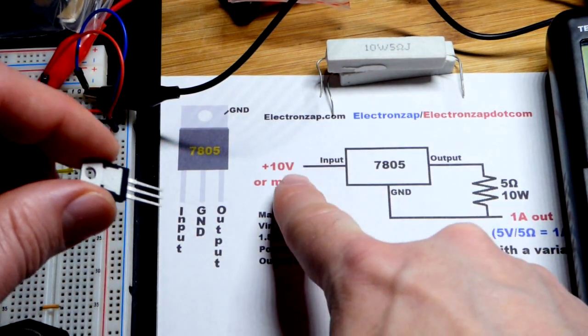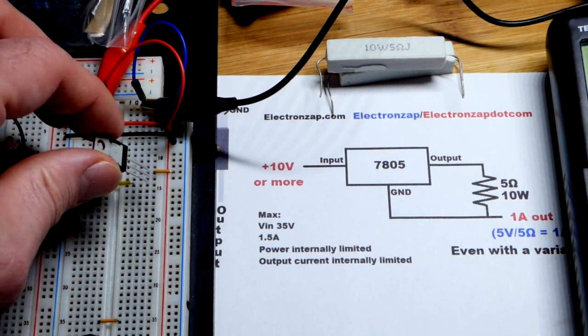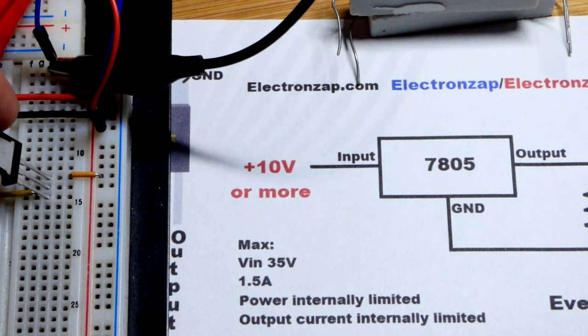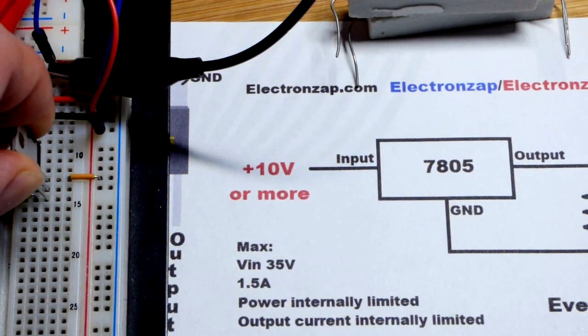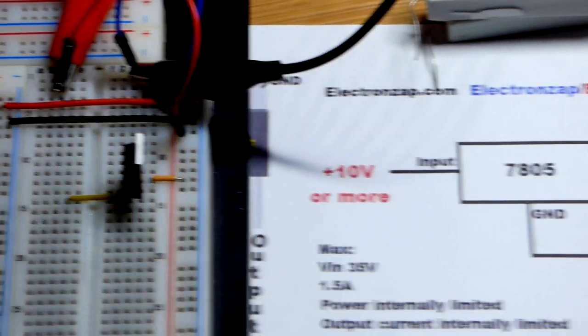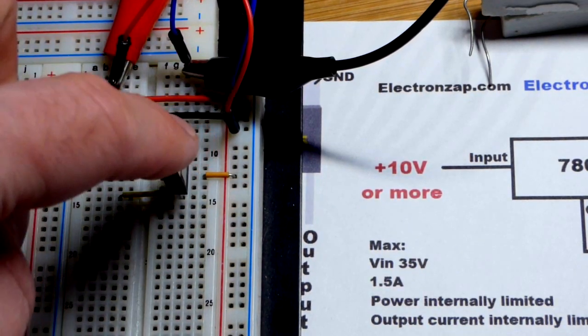So in any case the left pin is input, middle pin is ground which the tab is also ground, and then the output is the right pin there. What we're going to do is take the input and put it to the positive side of the power supply. And let's zoom in and you can see right there that the input is going to the positive supply. The output here is going to this jumper.